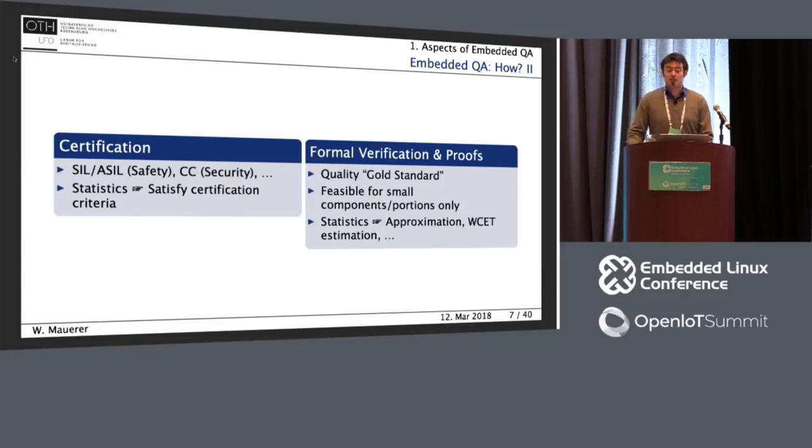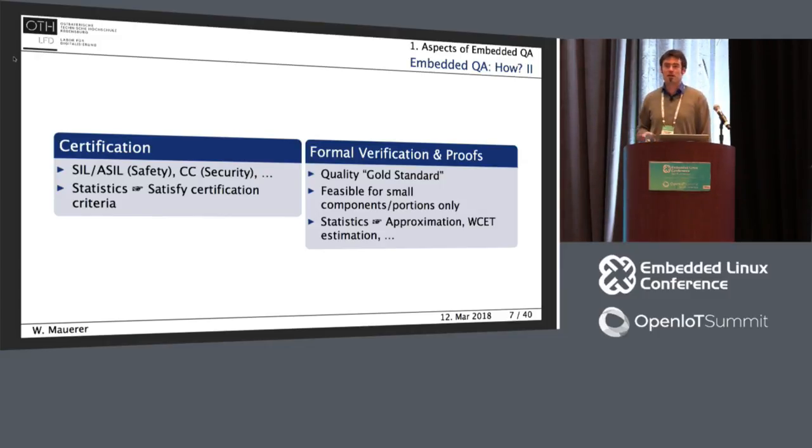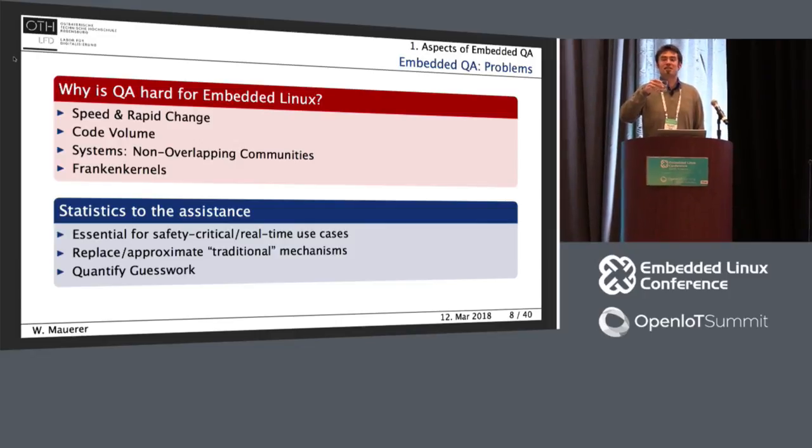Certification of systems is another area where statistics is becoming increasingly more important. In the good old days, people used to build systems that were completely deterministic. You wrote code, you proved that the code was complete and working as expected. These days, if you think of Linux systems that contain millions of lines of code, we cannot go with these approaches anymore but need to statistically ascertain that we satisfy the properties required for safety and other certification criteria.